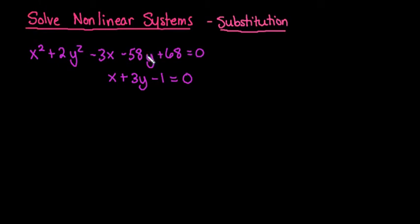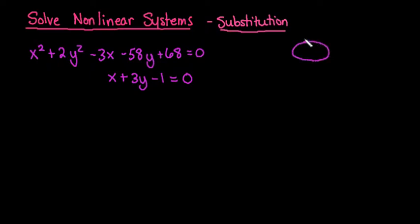For this video, we're going to solve a system of equations. One of these happens to be a linear equation and the other one happens to be an ellipse. An ellipse is oval shaped, and we have a line, so at most we can have two points where they would intersect each other.